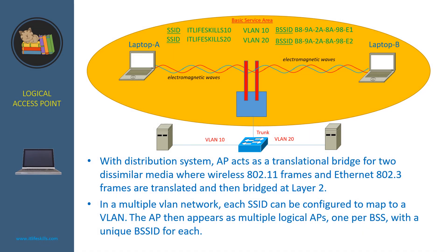With a Distribution System, the AP acts as a translational bridge for two dissimilar media, where wireless 802.11 frames and Ethernet 802.3 frames are translated and then bridged at Layer 2. In a multiple VLAN network, each SSID can be configured to map to a VLAN.